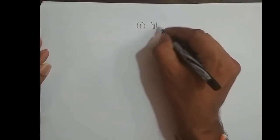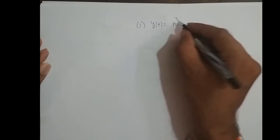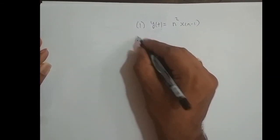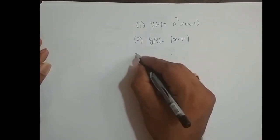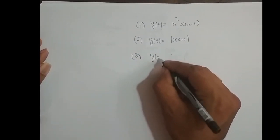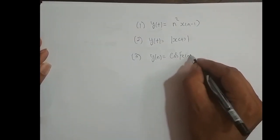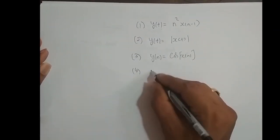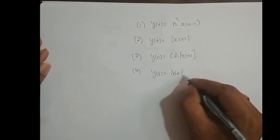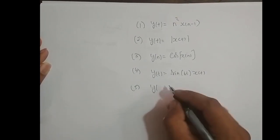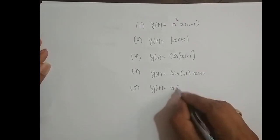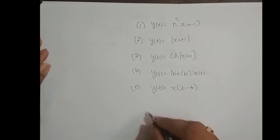Here are some practice problems. Try to check for memory and causality for: (1) y(t) = n²·x(n-1), (2) y(t) = |x(t)|, (3) y[n] = cos(x[n]), (4) y(t) = sin(6t)·x(t), and (5) y(t) = x(t - t₀).